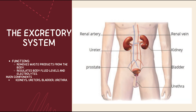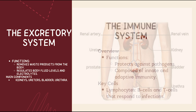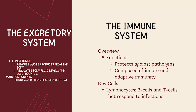The excretory system removes metabolic wastes. Main parts include the kidneys, ureters, bladder, and urethra. The kidneys filter blood and produce urine. Ureters carry urine to the bladder. The bladder stores urine, and the urethra releases it outside the body. This system keeps blood clean and balanced.